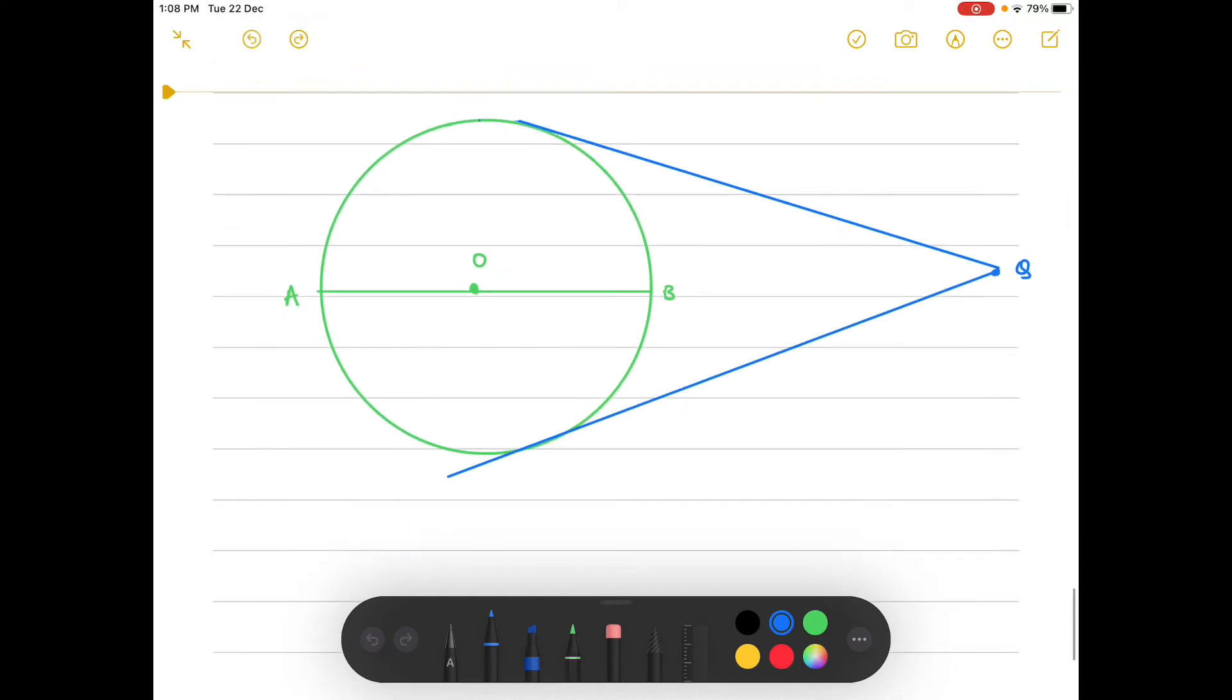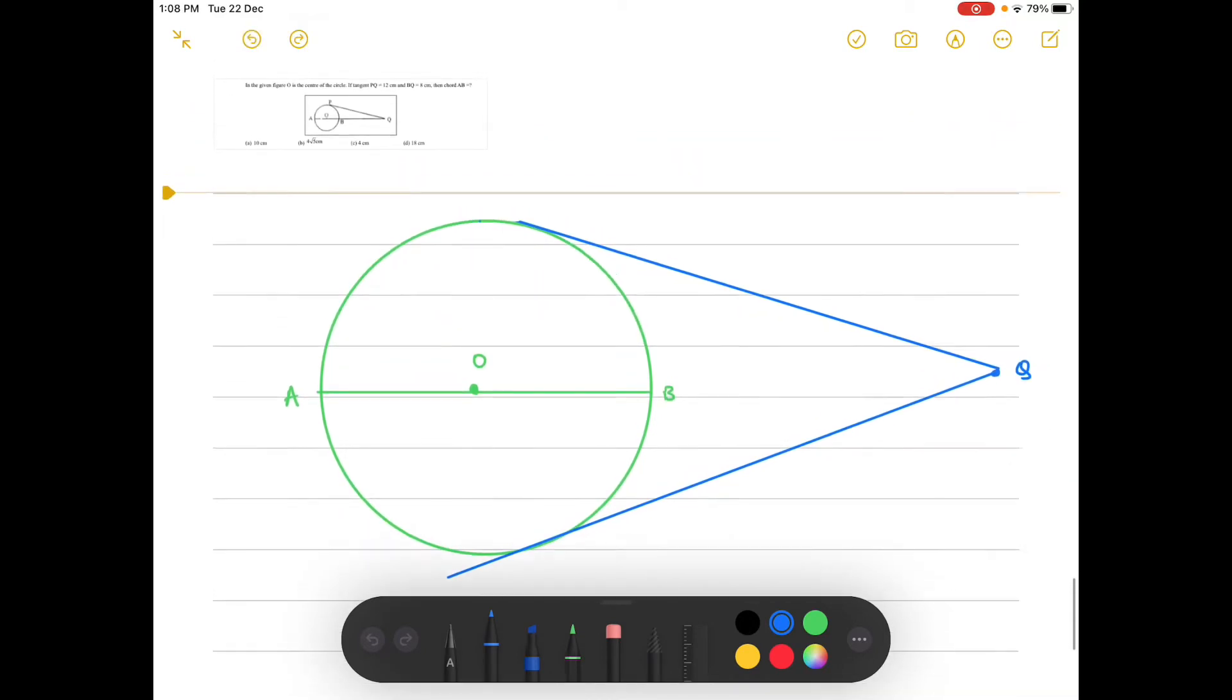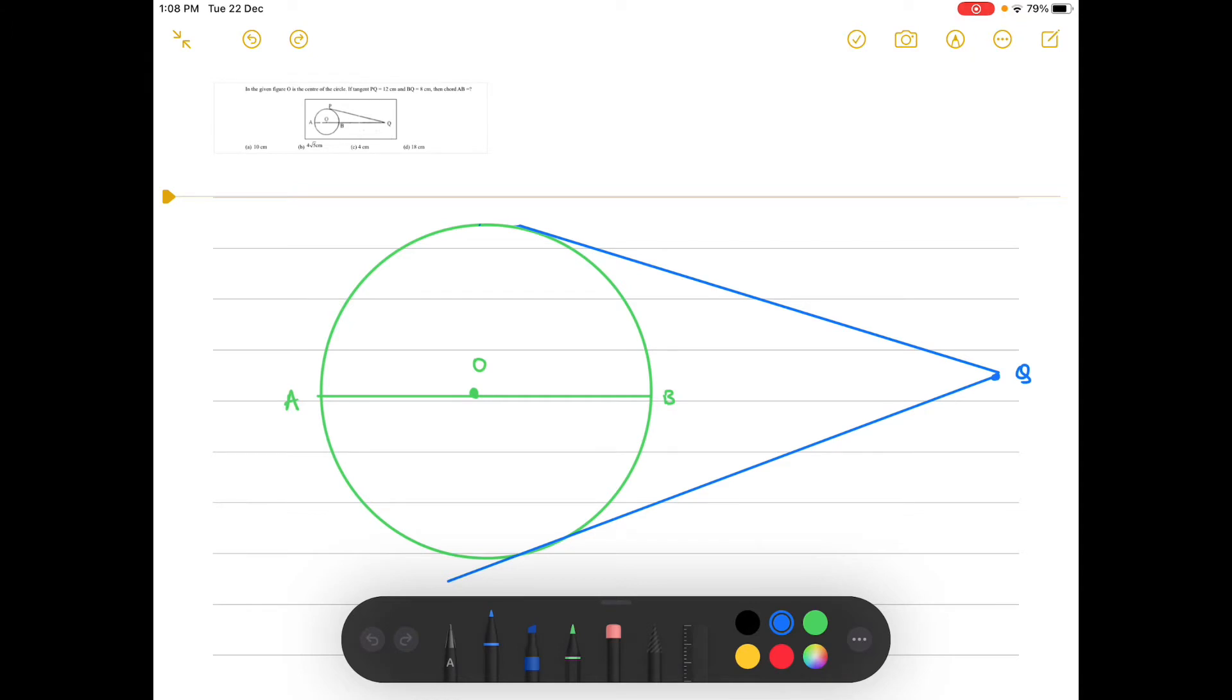The first thing I had taught you in the last circles questions was that when the radius touches the tangent at some point, let it be L, it makes an angle of 90 degrees. So we can use this part, and they have also given us BQ, so let's join these two as well.